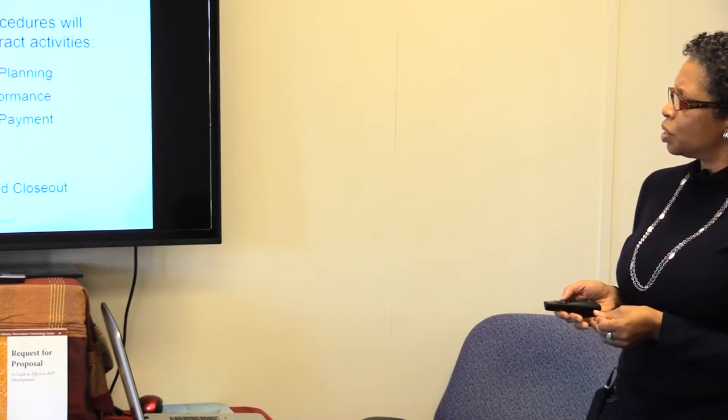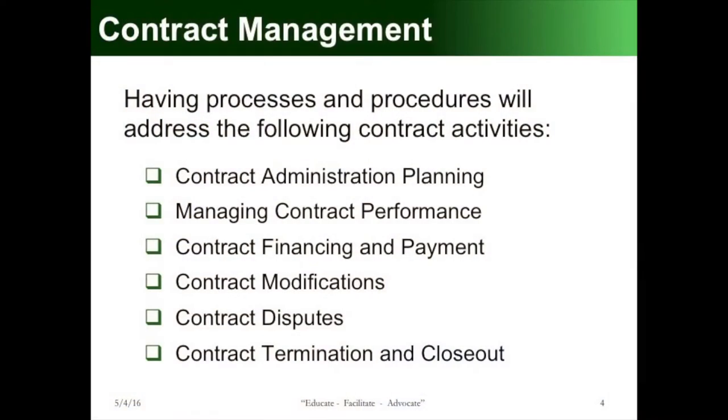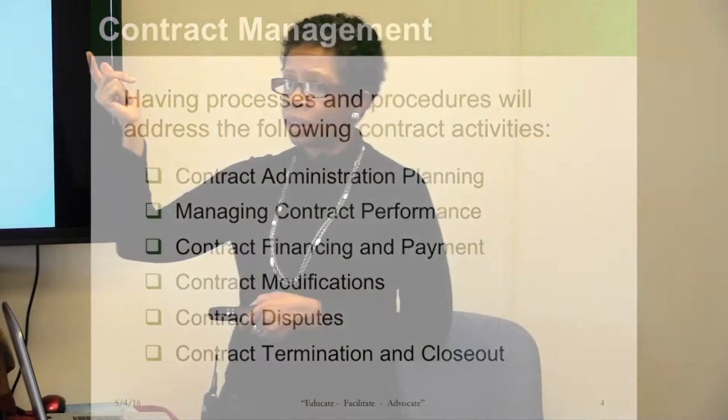Having a process and procedures in place for contract activities helps you to have an administration process and manage your performance. Whether it's a subcontract or a prime contract, you can go back and look at the requirements. Sometimes what we call scope creep happens — you've got a scope of work, but if it's not well defined or there's ambiguity, things start adding up. It may be time to do an addendum to the contract to cover all of those things.